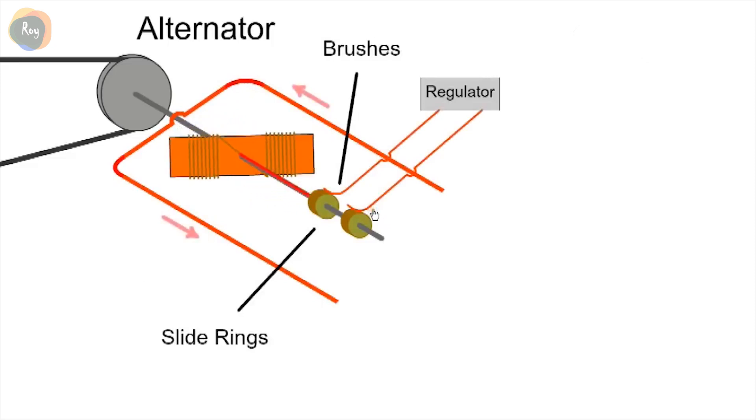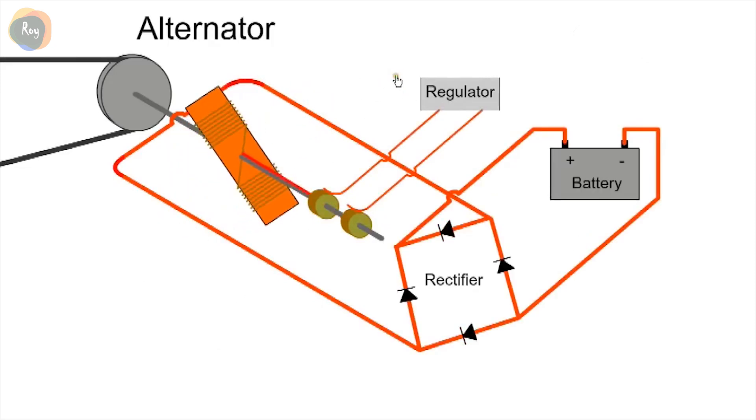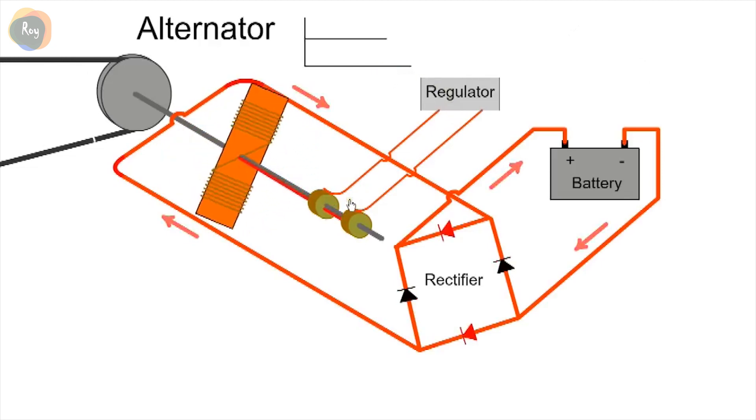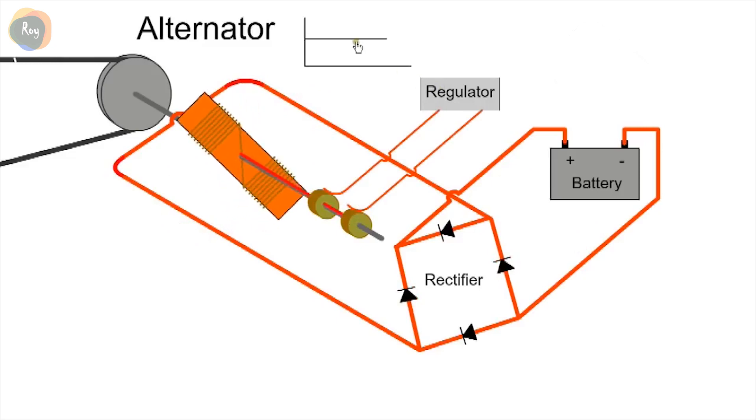Instead of using a permanent magnet, an electromagnet is used. By varying the amount of current in the rotor winding, it's possible to adjust the output voltage. Slide rings and brushes are employed to allow the current enter the electromagnet and the flow of DC current is controlled by the regulator.